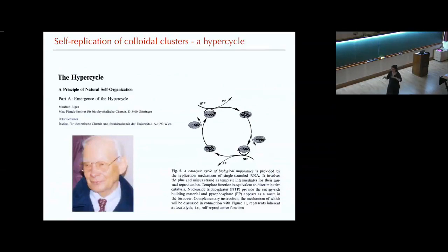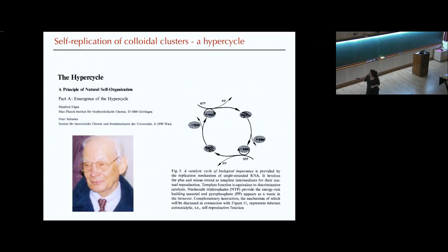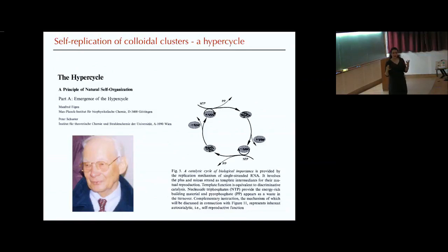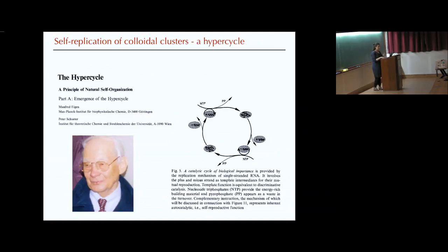I showed you this is a hypercycle — a set is making a complementary set. This is reminiscent of the work Eigen did with Schuster back in the 1980s, where they were arguing for an RNA-based origin of life. What they suggested as a cycle is that the plus and minus strands of RNA — the minus strand catalyzes formation of the plus and then the plus the minus — giving this hypercyclic behavior, one of the necessary ingredients for the origin of life. As it turns out, just because we are using these strands and complementary strands, we end up with this hypercycle kind of structure.